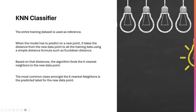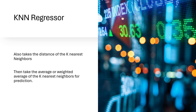For a KNN regressor, the first three steps stay the same. We take the distance to find the K nearest neighbors, and then take the average or weighted average of the K nearest neighbors' values for prediction. That's the overview — now let's dive into the code and develop some models in Python.